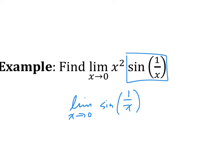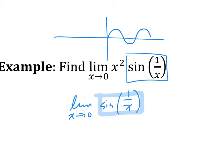We're going to first look at the limit as x goes to 0 of sine of 1 over x. Think of it not as 1 over x specifically, but just as sine of something. Think about how the sine graph looks — it oscillates. What affects the amplitude of the sine graph? The coefficient. So if there's a 2, it goes up and down between 2 and negative 2.